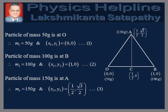Particle of mass 50 grams is at O. Therefore, M1 = 50 grams and (X1, Y1) = (0, 0). Particle of mass 100 grams is at B. Therefore, M2 = 100 grams and (X2, Y2) = (1, 0). Particle of mass 150 grams is at A. Therefore, M3 = 150 grams and (X3, Y3) = (1/2, √3/2).